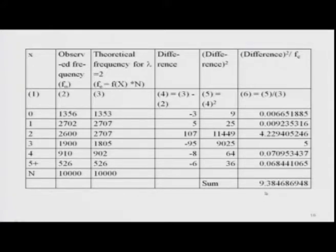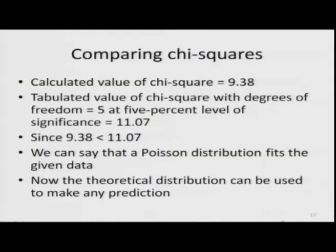The calculated chi-square from the data is 9.38. With 6 differences being compared, degrees of freedom are 6 − 1 = 5. The tabulated value of chi-square for 5 degrees of freedom at the 5% level of significance is 11.07. Since 9.38 is less than 11.07, we can say that the Poisson distribution fits the given data very well.